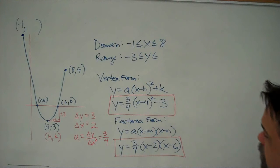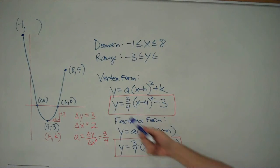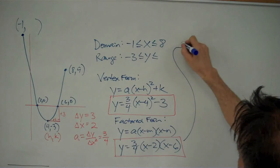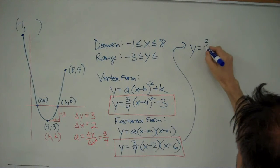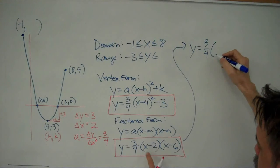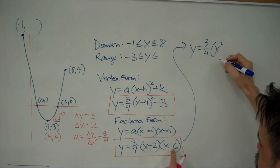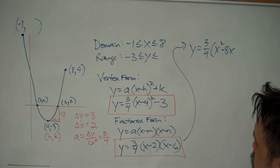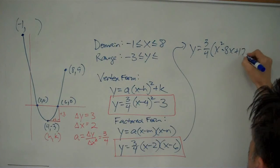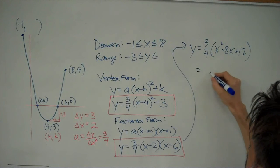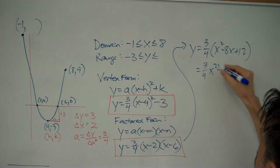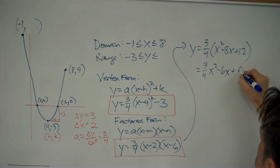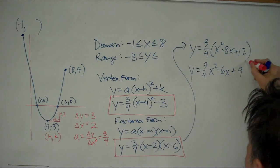All I have left is standard form. So how do I get standard form? Well, take either one of these, multiply it out. I usually start from factored form. This is going to give me y equals 3 fourths times x squared minus 8x plus 12. And that is 3 fourths x squared, 3 fourths of 8 is 6, 3 fourths of 12 is 9, and that's my standard form.